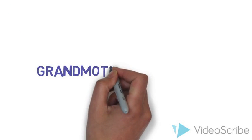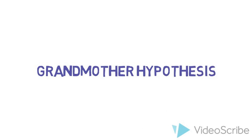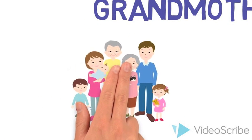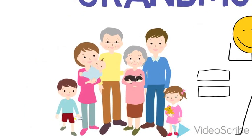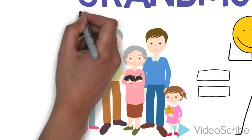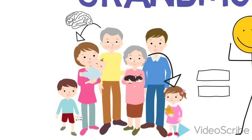The first of these is the grandmother hypothesis. This theory suggests that having grandparents, and therefore living after being able to reproduce, is still a fitness benefit. Though the grandparent is unable to reproduce themselves, they can bring resources to their family, which ensures that their genes will stay alive.